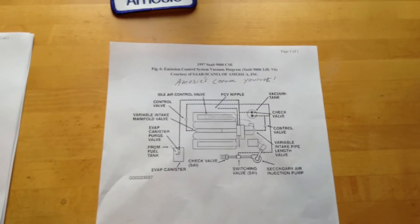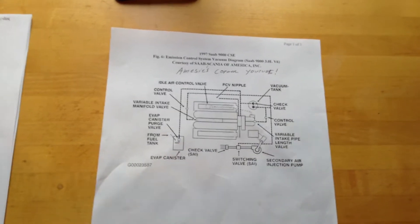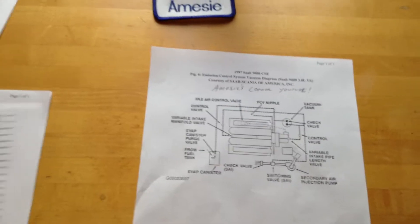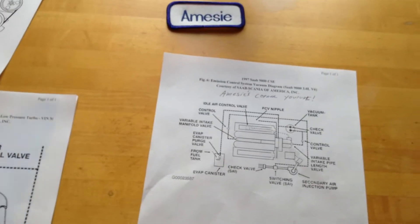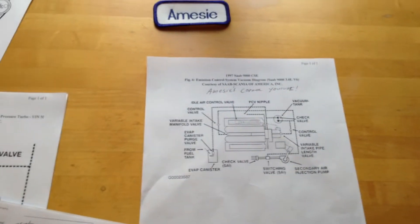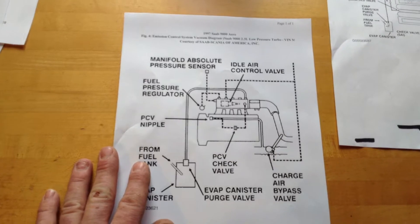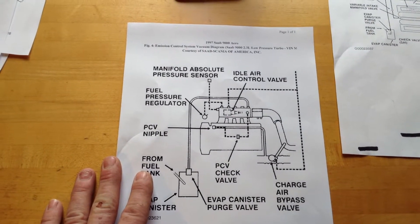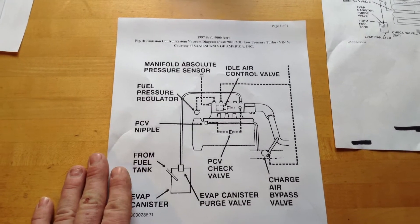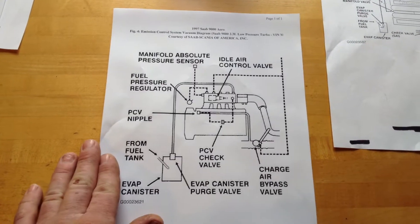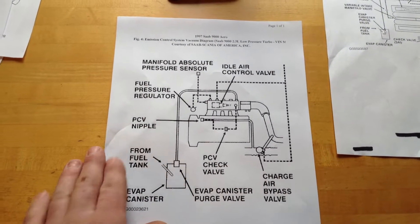And then I've got a bunch of others here. Let me find the next one. I probably should have correlated these a little better before I started filming, but it's been a long day. And then here we have that same vacuum diagram for the low-pressure turbo. So there you have it. This would be the LPT car.